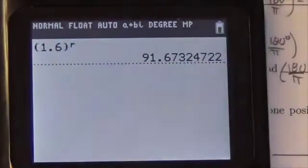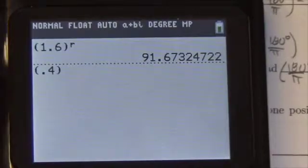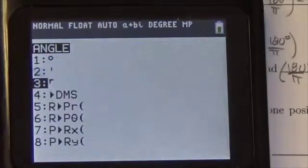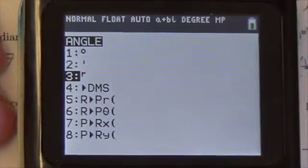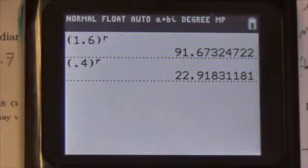So this next question, bracket .4, go into my angle menu, tell the calculator that this is a radian. And I get 22.9.